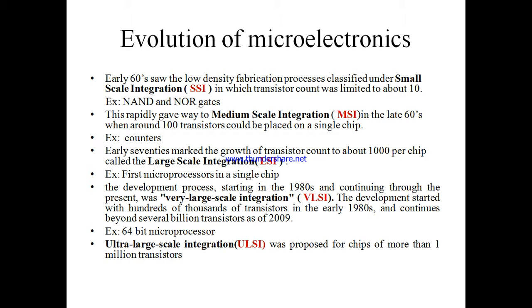The next generation of ICs is MSI, Medium Scale Integration, using 10 to 500 transistors on a single chip. Devices introduced in the late 1960s contained hundreds of transistors on each chip. An example of MSI is the 16-bit shift register. Large Scale Integration (LSI) came in the 1970s with tens of thousands of transistors per chip. Examples of LSI include the 1-kilobyte RAM, calculator chips, and the first microprocessor.